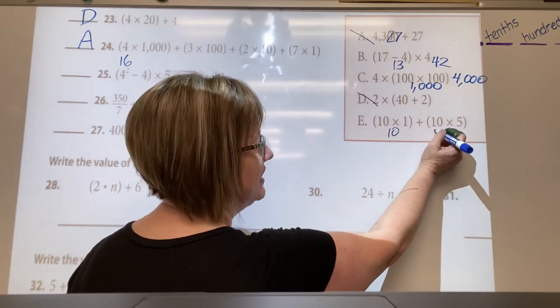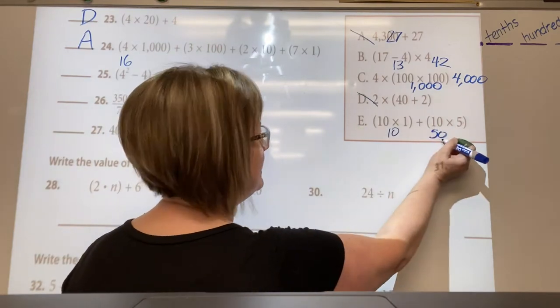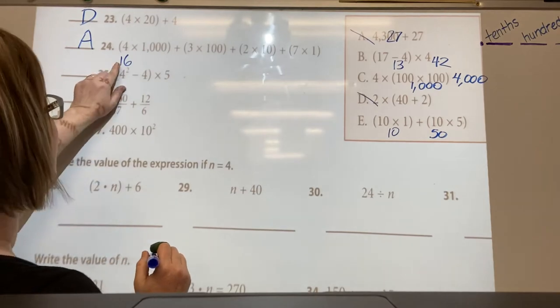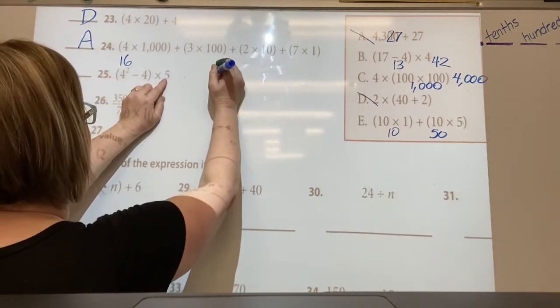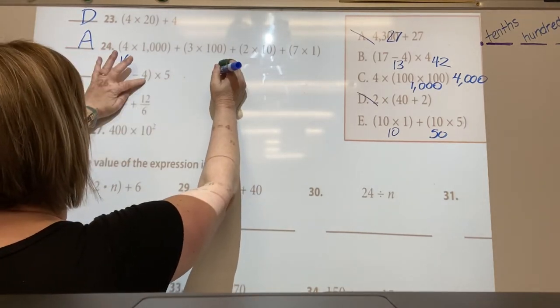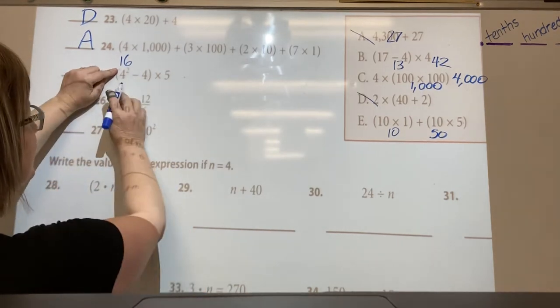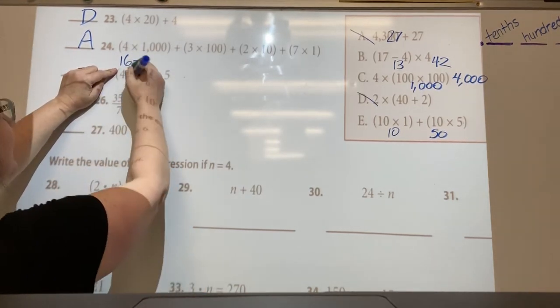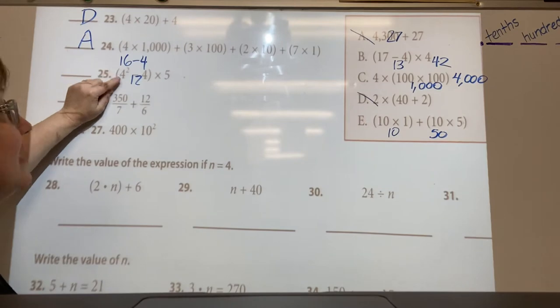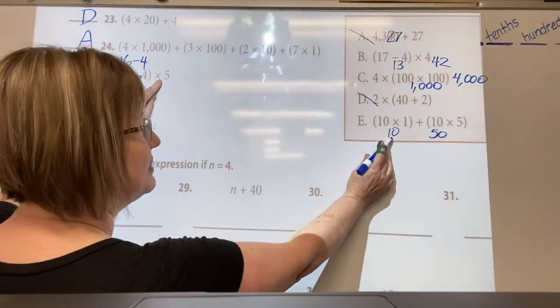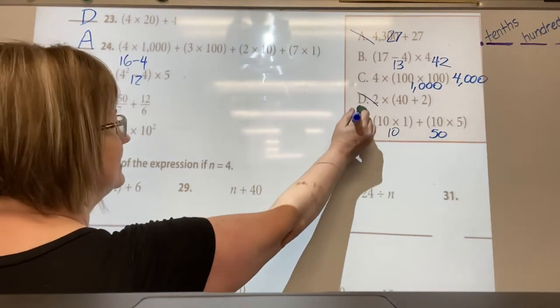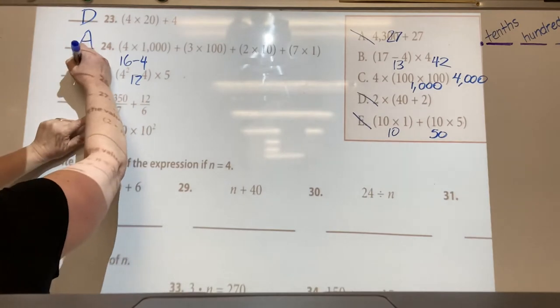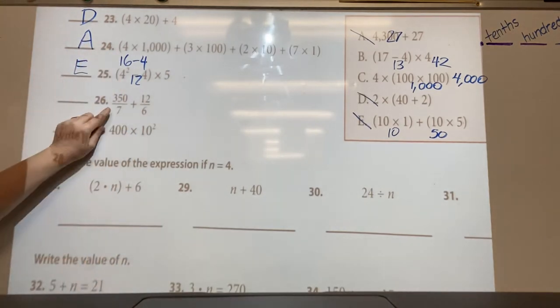Wait a minute, twelve. Yeah, twelve times, because sixteen minus four is twelve and twelve times five is sixty. So this one equals sixty and this one equals sixty. So E is twenty-five.